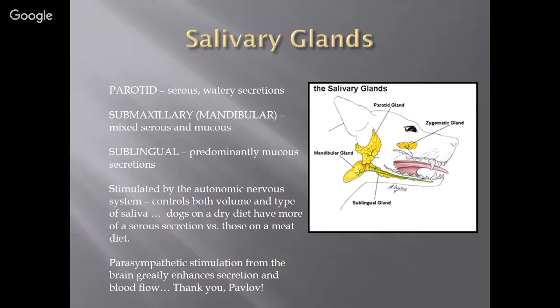Parasympathetic stimulation from the brain greatly enhances secretion and blood flow. That's what happens with Pavlov's dogs — they would start to salivate when digestion was initiated by the smell or thought of food. He would ring a bell and present the animal with a steak, and the salivary glands would get ready through parasympathetic stimulation. Over time, he could just ring the bell and get the automatic salivation reaction. That's how we found we can train a reaction to a sound without having the reward directly in front of the animal.